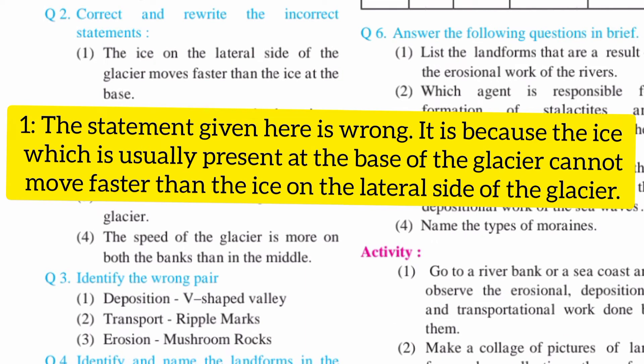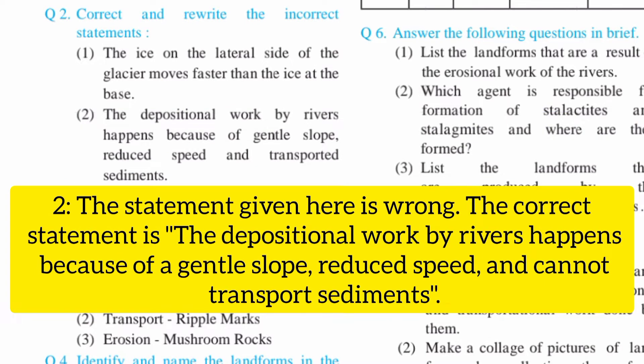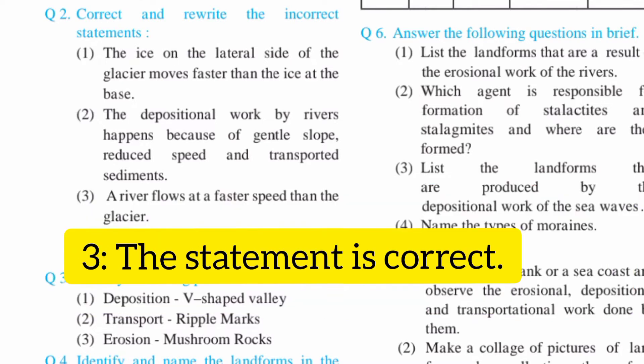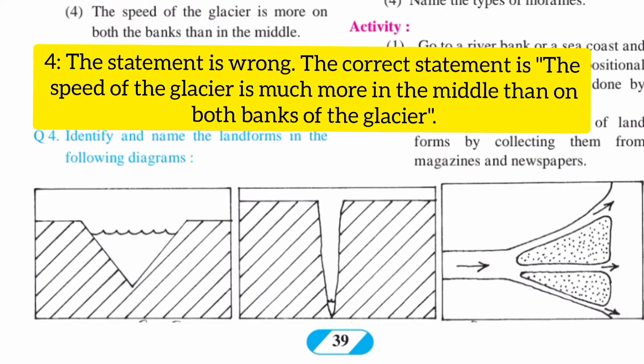Question number 2, correct and rewrite the incorrect statements. First: the ice on the lateral side of the glacier moves faster than the ice at the base. Second: the depositional work by rivers happens because of gentle slope, reduced speed, and transported sediments. Third: a river flows at faster speed than the glacier. Fourth: the speed of the glacier is more on both the banks than in the middle.